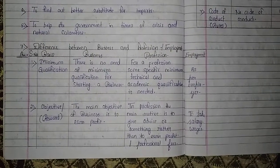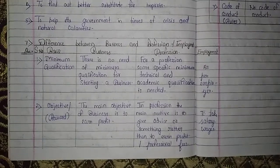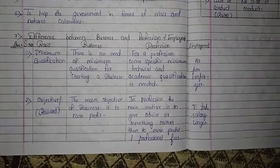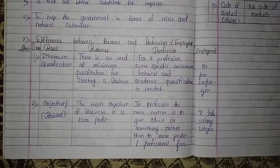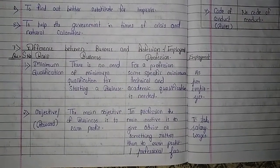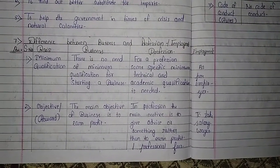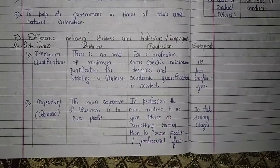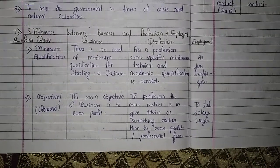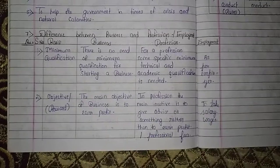Seventh question: difference between business, profession, and employment. The first basis of difference is minimum qualification. In business, there is no need of minimum qualification for starting a business. In profession, you need to have some specific technical and academic qualification. In employment, it depends on what your employer requires — you need to have relevant knowledge.